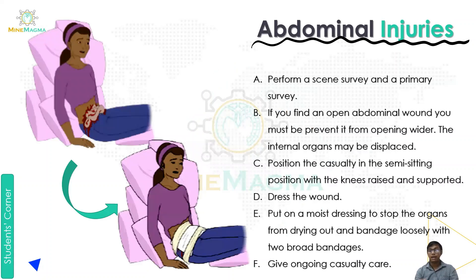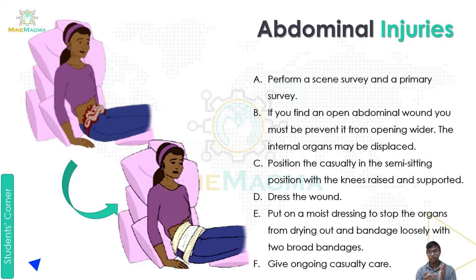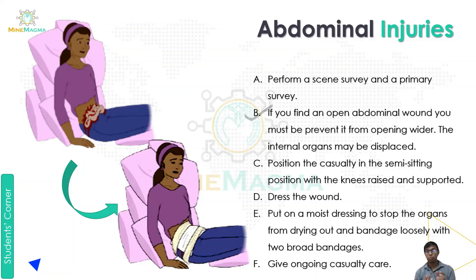Next is abdominal injury. For an abdominal injury, the first step is scene survey and primary survey. As seen in the image on the left side, the abdomen has been cut and internal body organs are coming out — this is called an abdominal injury. After completing the scene survey and primary survey, we provide first aid and call for a medical emergency. The second point: if you find an open abdominal wound, it must be prevented from opening wider, as the internal organs may be displaced.